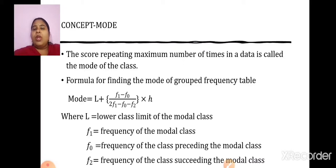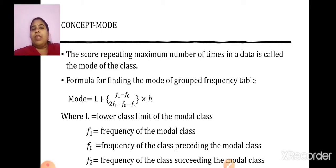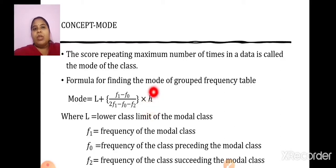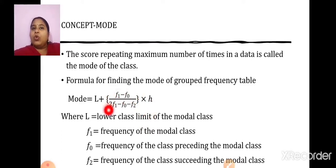F0 represents the frequency of the class preceding the modal class, just above the modal class. And F2 represents the frequency of the class succeeding the modal class, just below the modal class. Again, the formula: Mode is equal to L plus F1 minus F0 upon 2F1 minus F0 minus F2 into H. H is the width or range of the class — upper limit minus lower limit gives you the value of H.